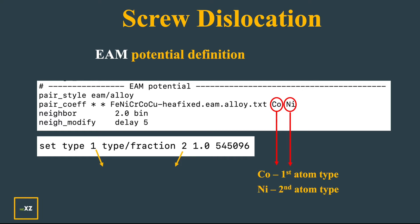I use set type 1 type fraction 2 1, so I convert the first atom type to second atom type. I completely convert with a fraction of conversion 1. If it's 0.5, half of the atoms are type 1 and half are type 2. If I give 1, I am converting the cobalt first atom type completely to nickel.